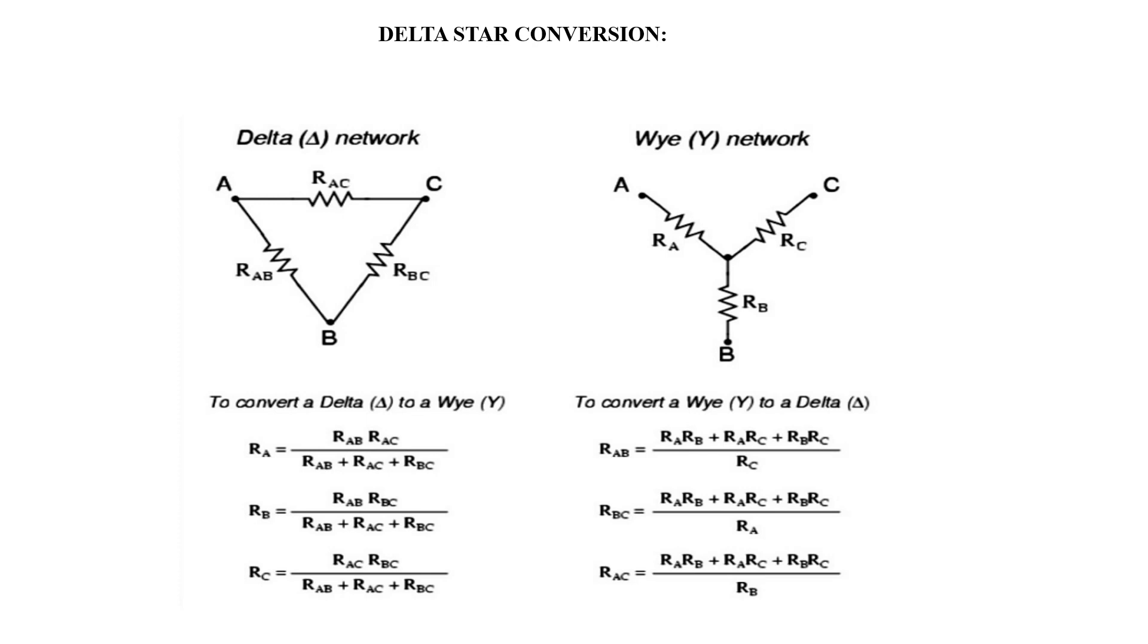If the three resistances are connected in such a manner that one end of the first is connected to the first end of the second and the second end of the second to first end of third and so on to complete a loop, then the resistances are said to be connected in delta.